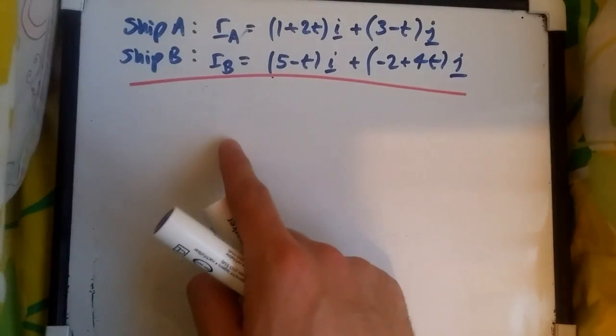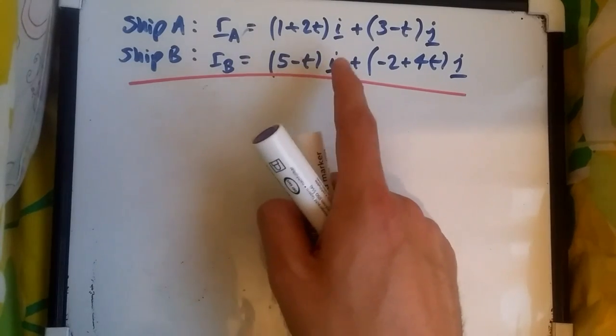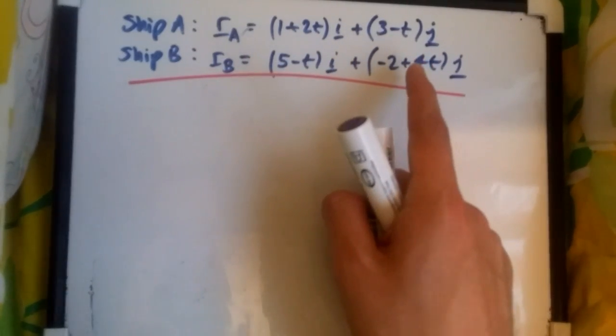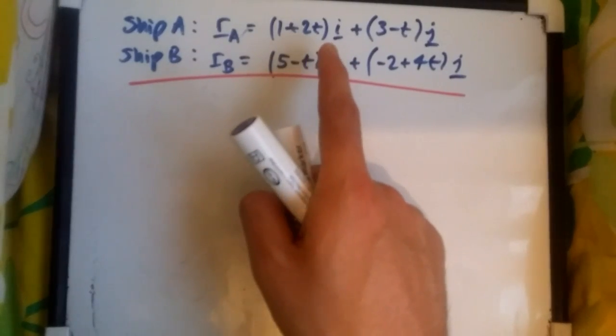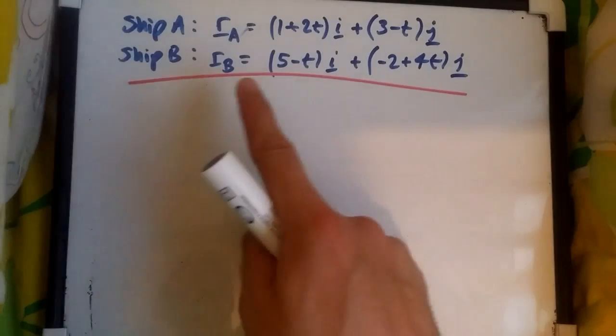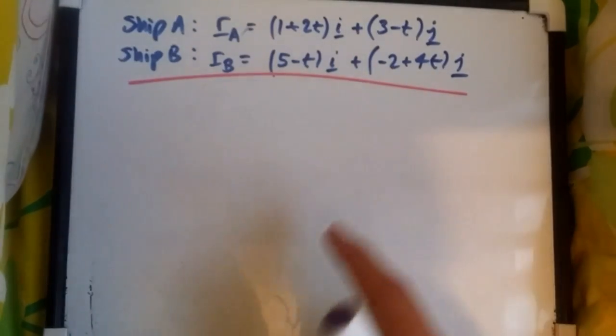Suppose we've got two ships with position vectors. Ship A: (1+2t)i + (3-t)j. Remember, i is always due east and j is always due north. And Ship B with position vector: (5-t)i + (-2+4t)j.